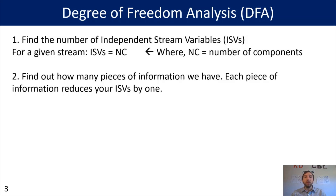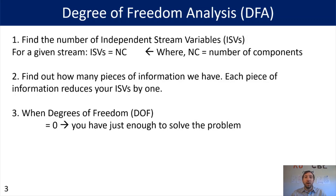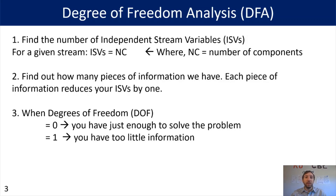When we have a degree of freedom of zero, that means that we have all the information we need in order to solve the problem — no more, no less. When we have a degree of freedom of one, that means we have too little information; I would need one more piece of information in order to solve my problem. If I had a degree of freedom of three, that means I need three new pieces of information in order to solve my problem.